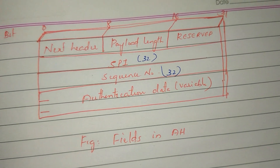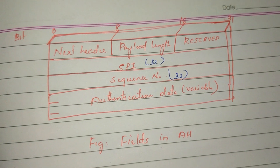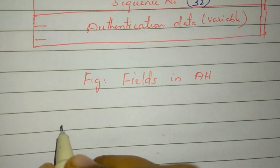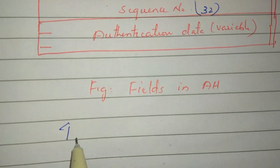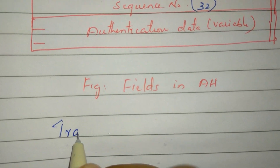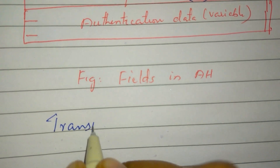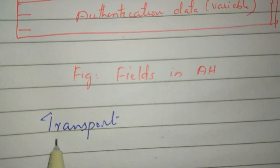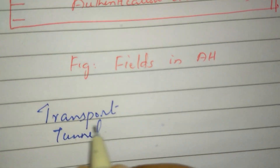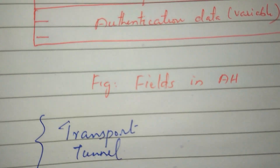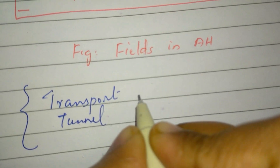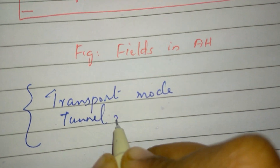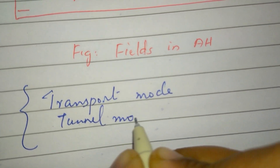The authentication header has two modes of operations: transport mode and tunnel mode.